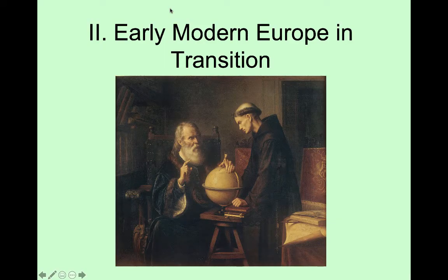Roman numeral II: Early Modern Europe in Transition. This is the second lecture on what's called the Early Modern Period in this series. The Early Modern Period goes from 1450 to 1750. In part one we looked at European exploration around the world, its motives and methods, and how it administered its empires and established colonies. In part two we're going to look at Early Modern Europe, very much a society in transition.